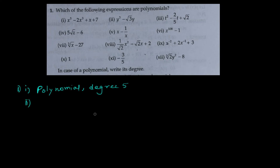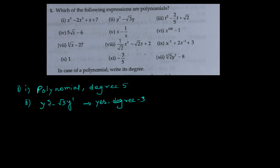Second one: x cubed minus root 3 times y. We can see the root is not over y, so y will have the power 1 and x has the power 3. So it is a polynomial, and the degree is 3 — the highest power of the variable is 3.